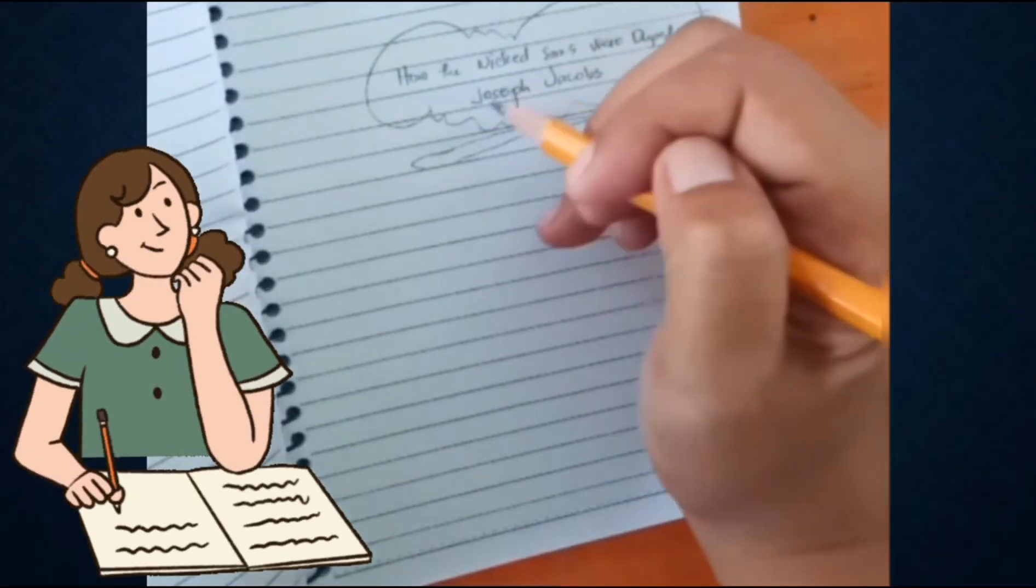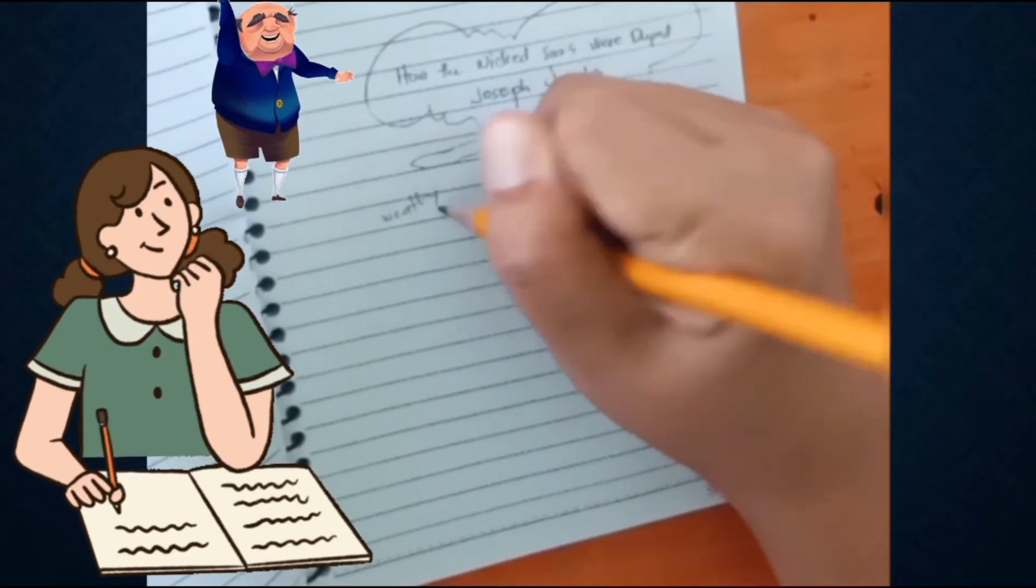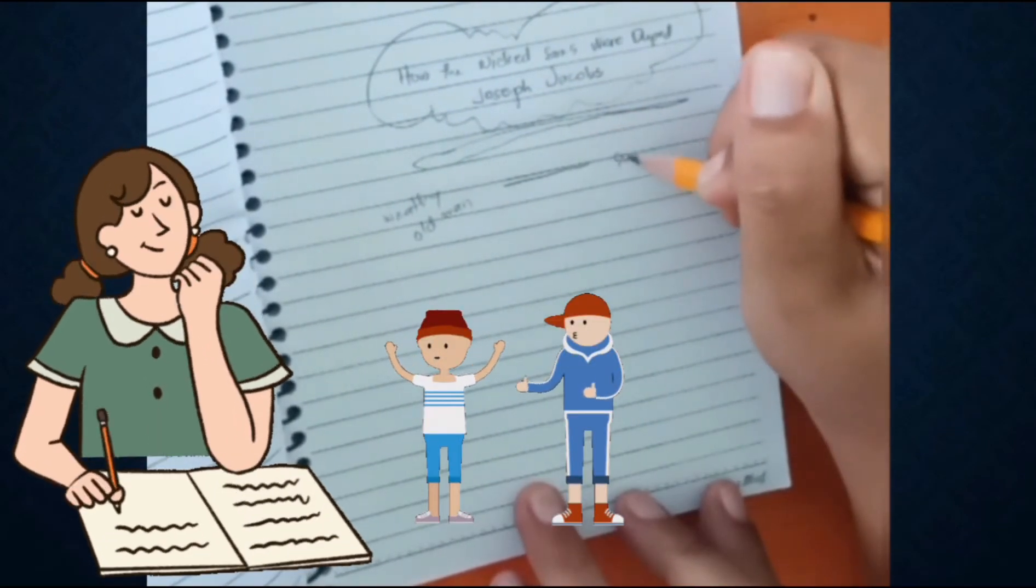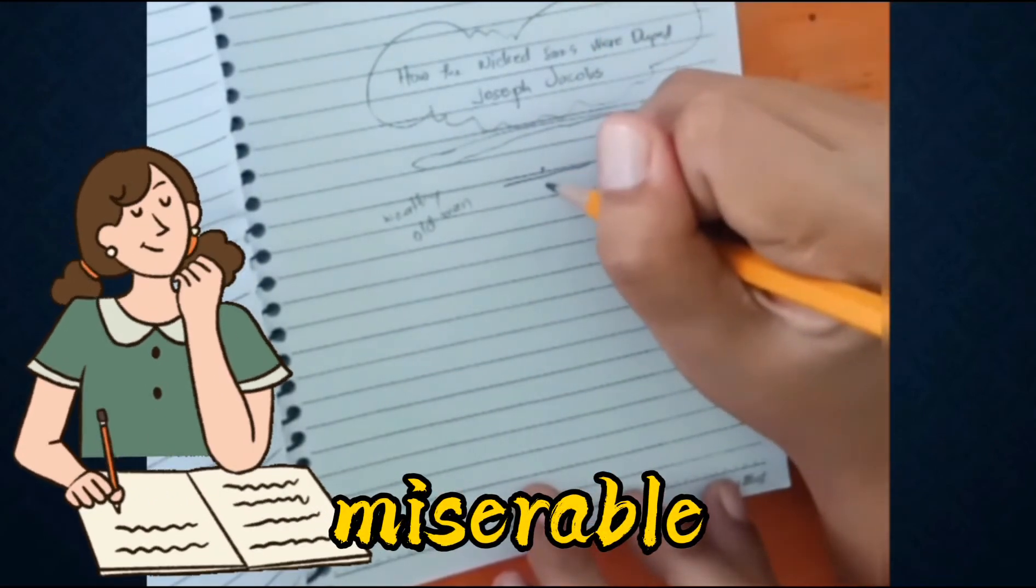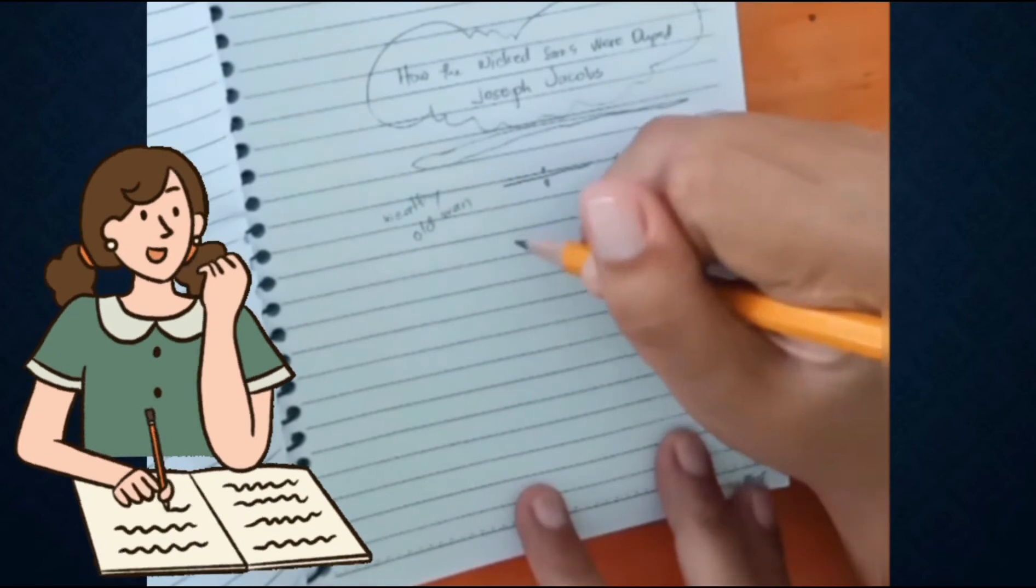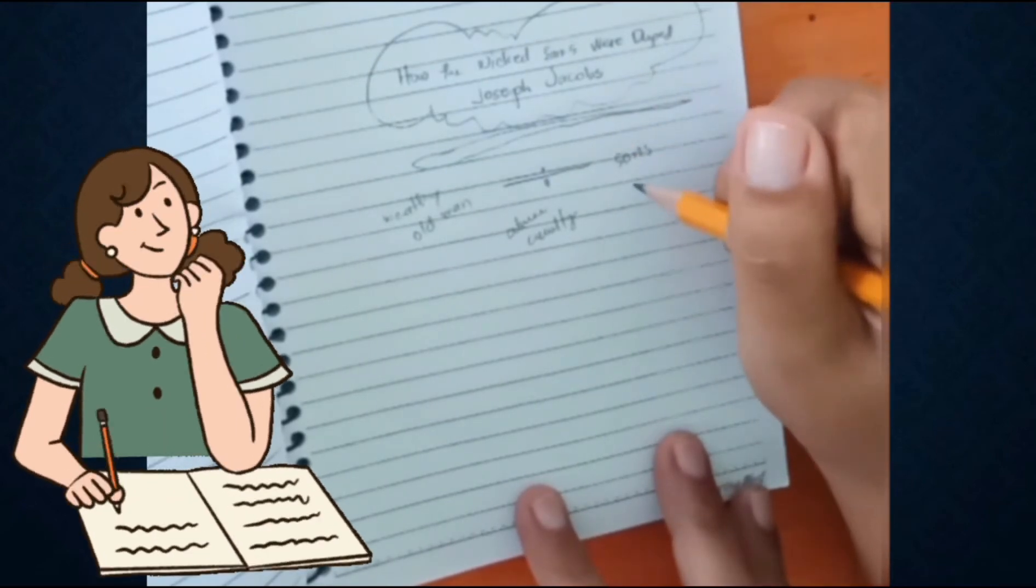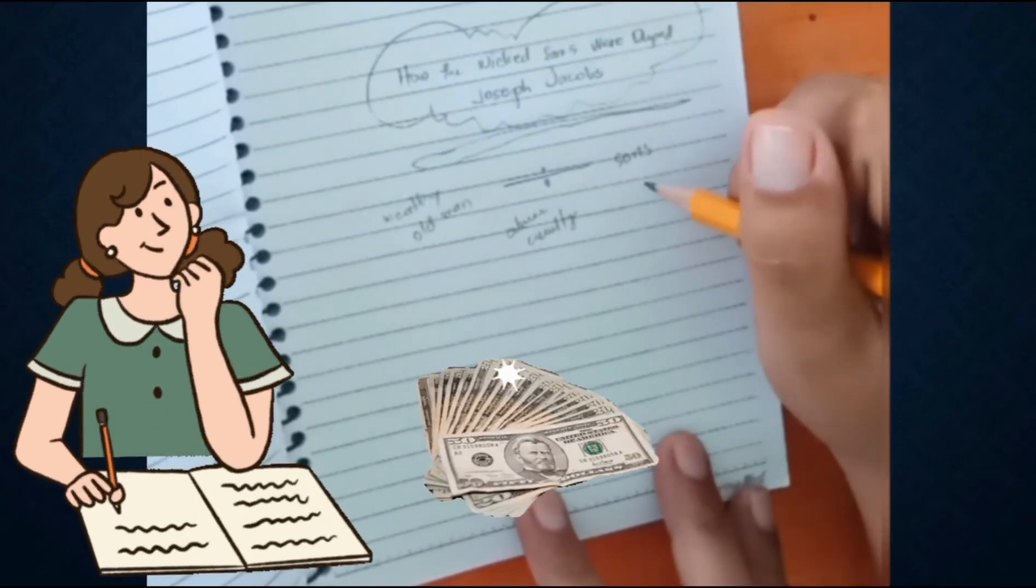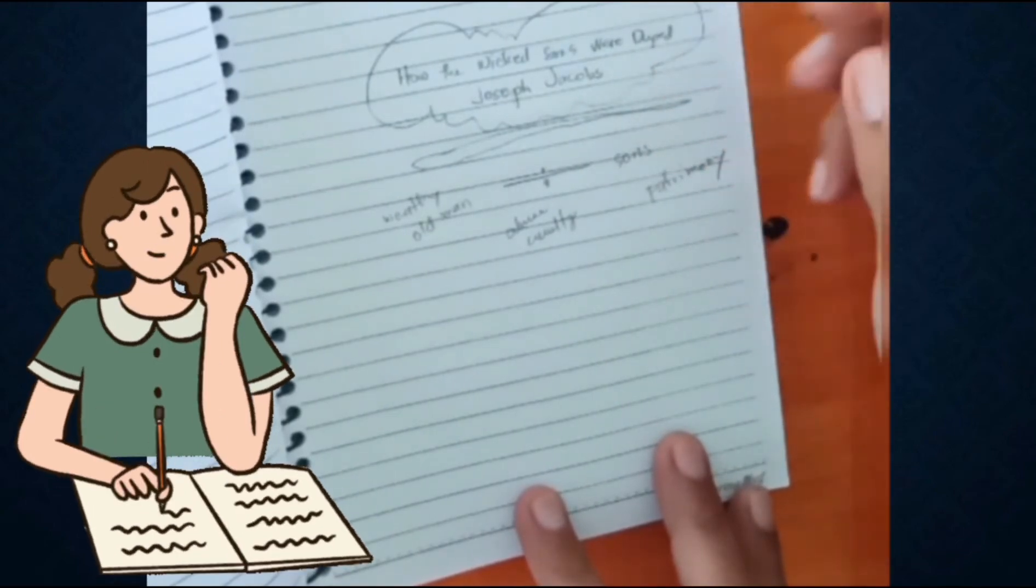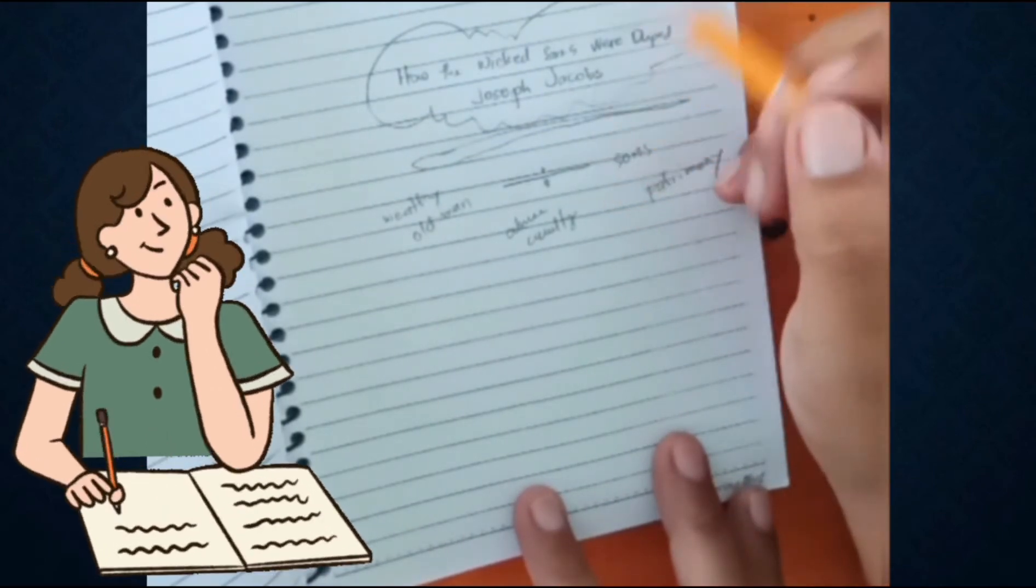How the Wicked Sons Were Duped by Joseph Jacobs. A very wealthy old man, imagining that he was on the point of death, sent for his sons and divided his property among them. However, he did not die for several years afterwards, and miserable years many of them were. Besides the weariness of old age, the old fellow had to bear with much abuse and cruelty from his sons - wretched, selfish ingrates. Previously they vied with one another trying to please their father, hoping thus to receive their patrimony. They cared not how soon he left them - nay, the sooner the better - because he was only a needless trouble and expense, and they let the poor old man know what they felt.